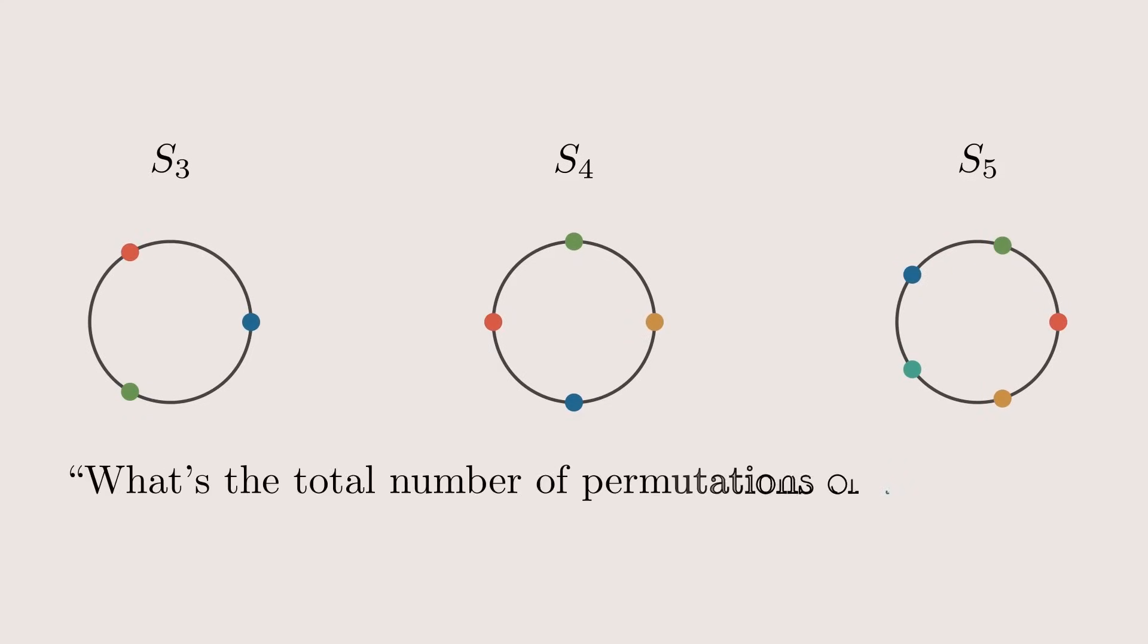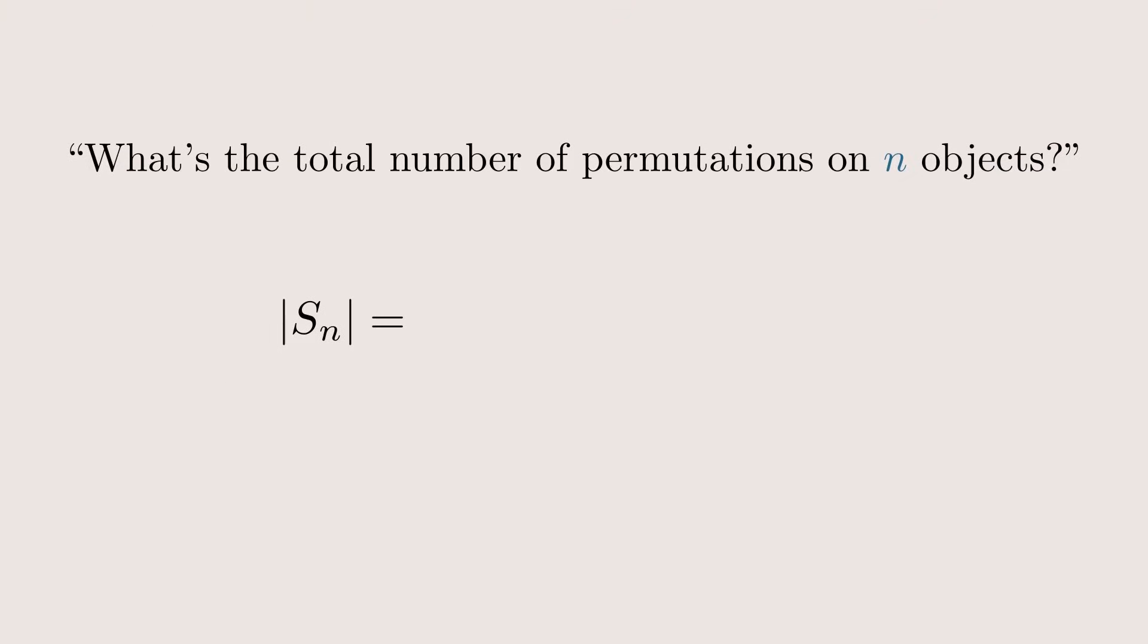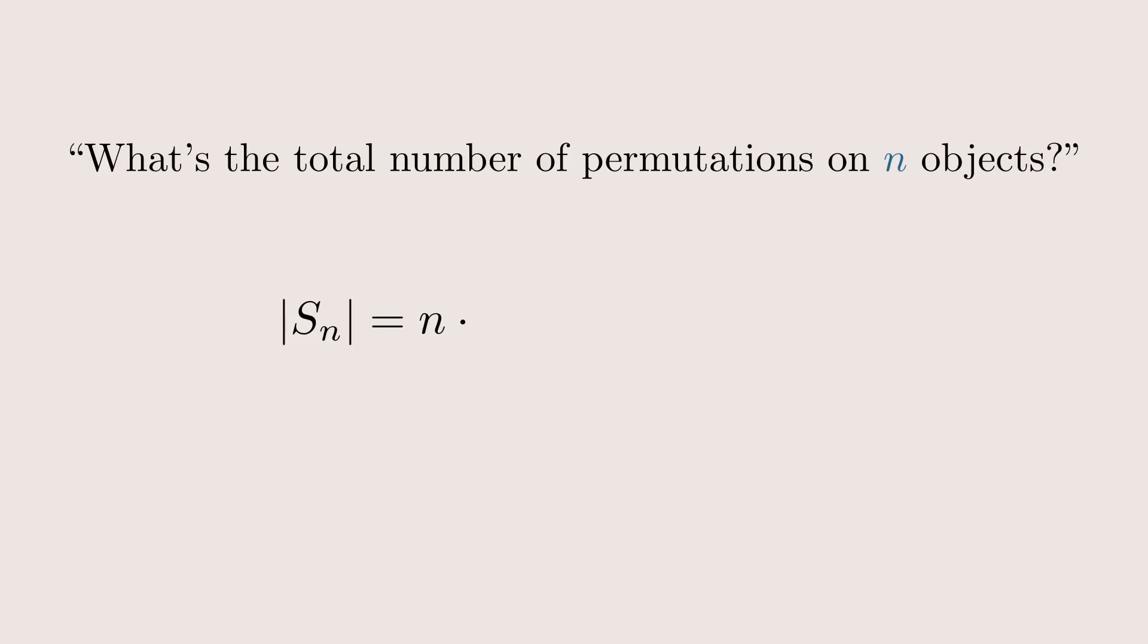The so-called symmetric group, Sn, contains all possible permutations of n objects. You can swap two of them, for example, or you can shuffle them around however you like. Each of these actions, where you change or don't change the order of the objects, is one of the permutations. So think about it. What's the total number of permutations on n objects? There is n possibilities to put the first element, n-1 for the second, and so on up to only one for the last one. So there is n factorial permutations in total.